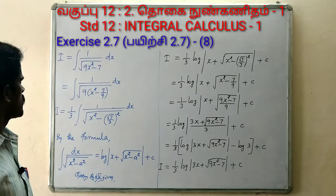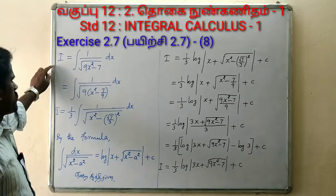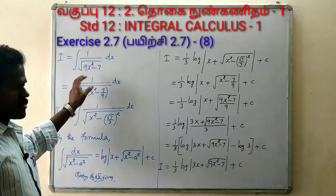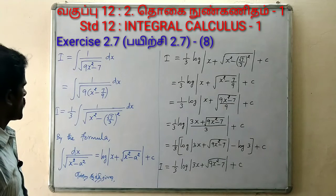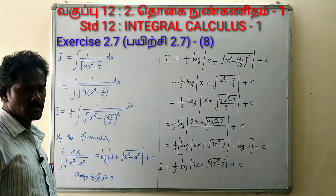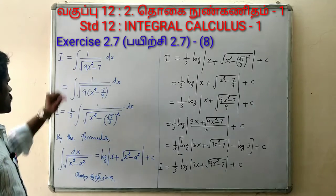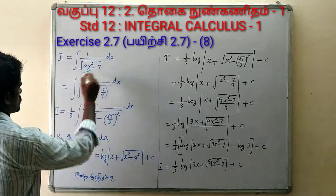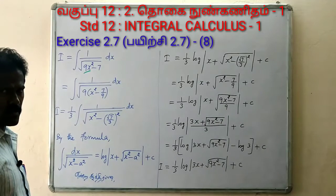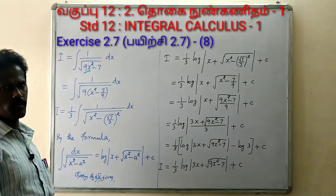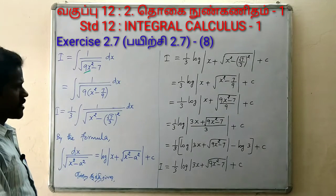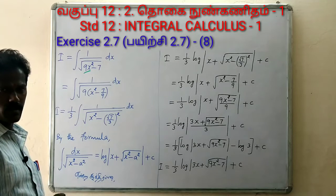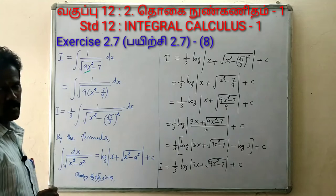I is equal to the integral of 1 over √(9x²-7) dx. Let the x² coefficient be noted — it is 9. We set x² equal to x², working with the coefficient 9 as our starting point for this integration problem.